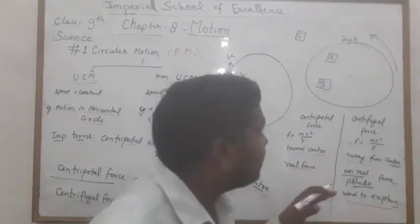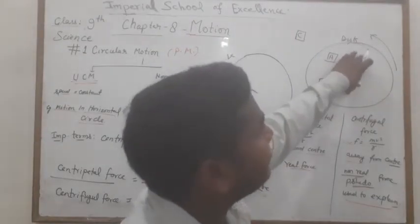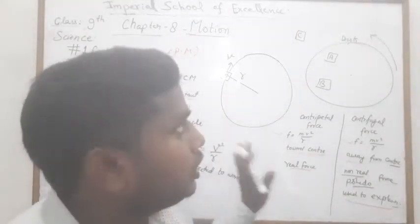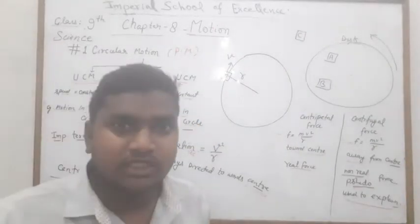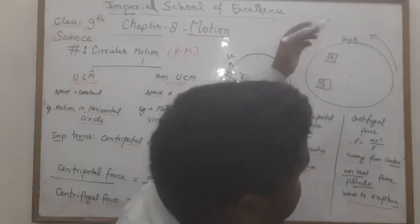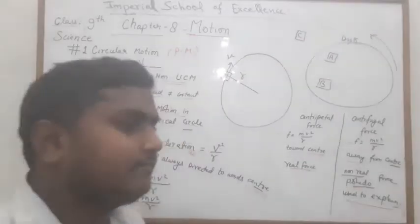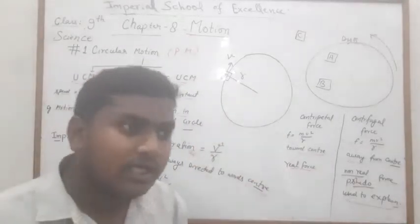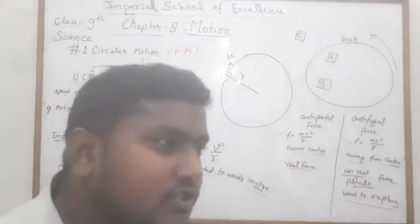इसे समझने के लिए एक example: एक disc है जो rotate कर रही है। उस पर तीन objects हैं - A, B, और C। A और B उसी disc पर हैं और disc के साथ rotate कर रहे हैं, जबकि C बाहर है। C object जब A को observe करता है, तो C कहता है कि A circular motion में है, इसलिए उस पर एक force लग रहा होगा।